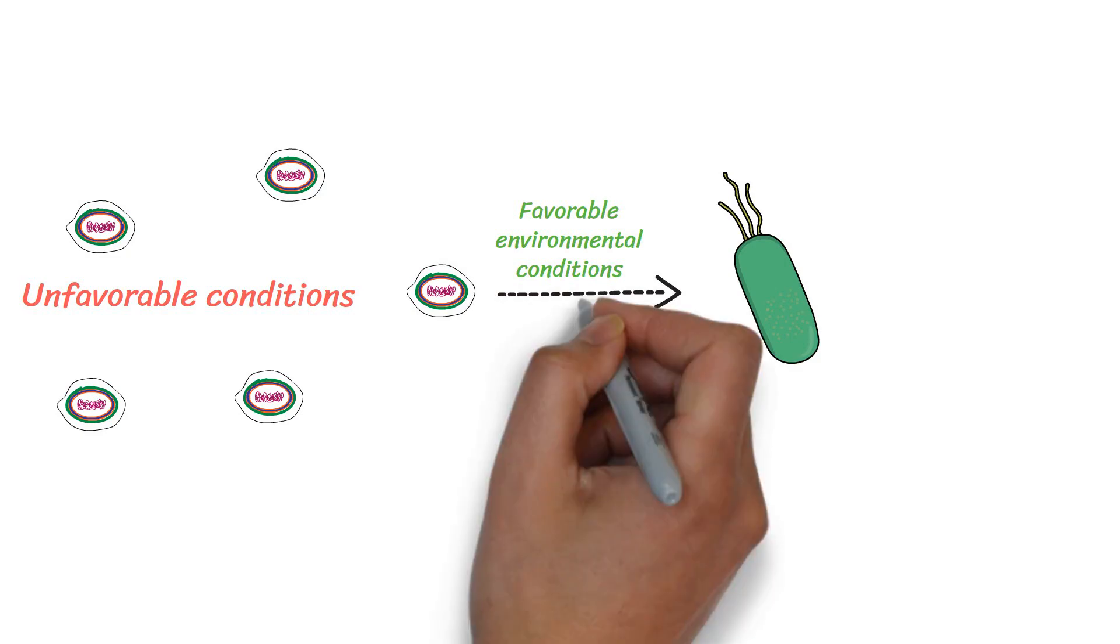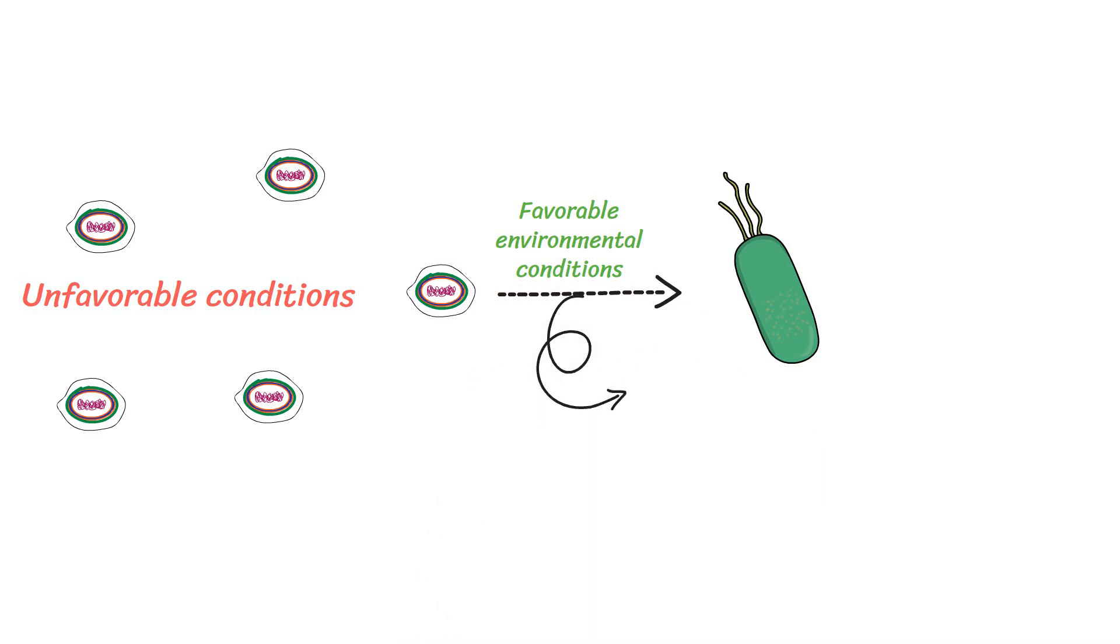The transformation of a spore to a vegetative cell happens in three stages: activation, germination, and outgrowth.